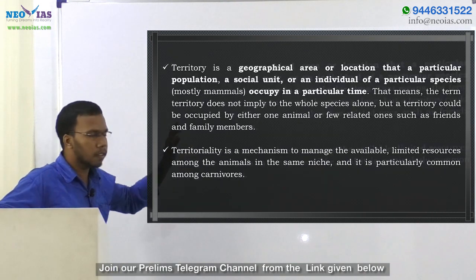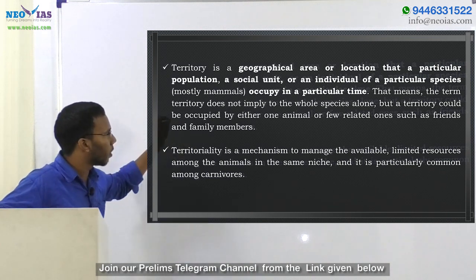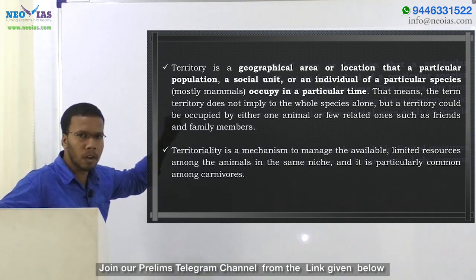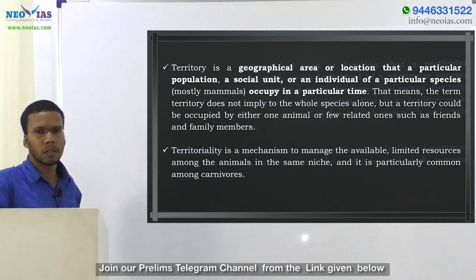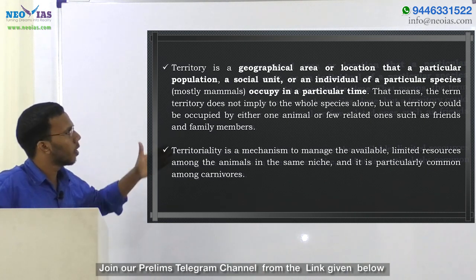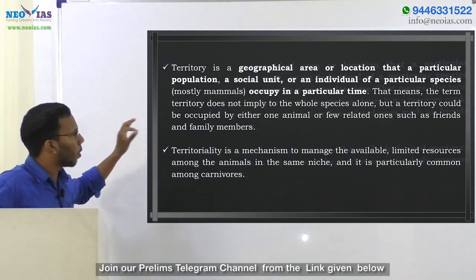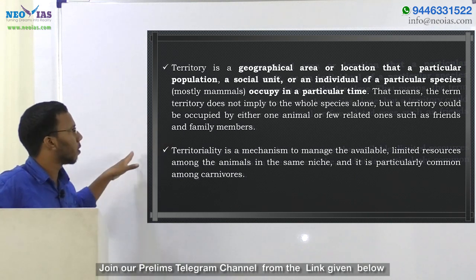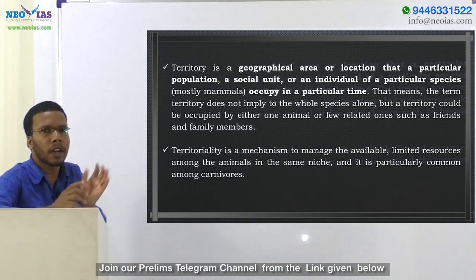Territory is a geographical area or location that a particular species, population, social unit, or individual of a particular species occupies at a particular time — that is known as territory. Regarding home range, it defines the whole species, but territory does not imply the whole species. Territory could be occupied by either one animal or a few related ones such as family members. So territory regards a small population or an individual, while home range regards the entire species.